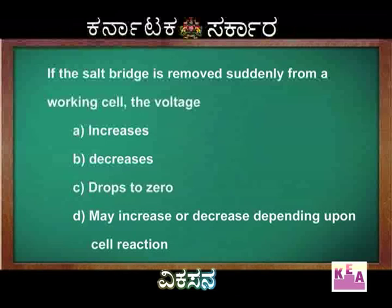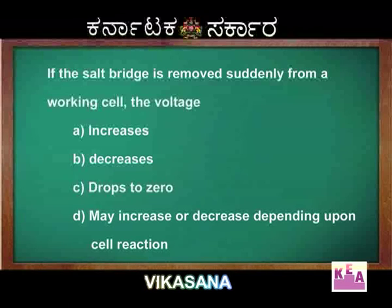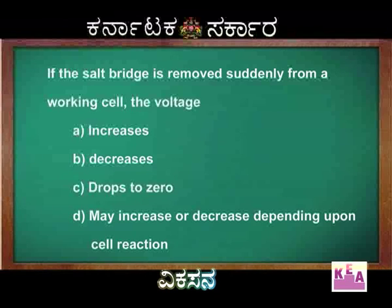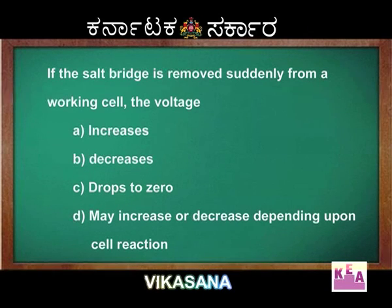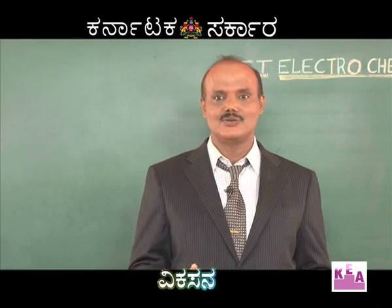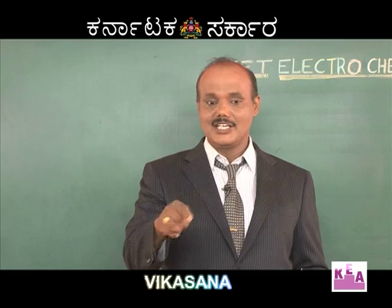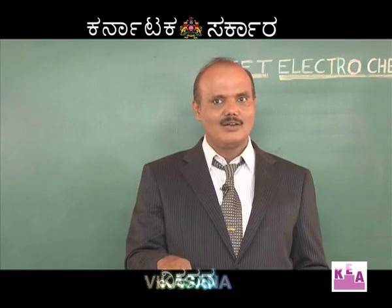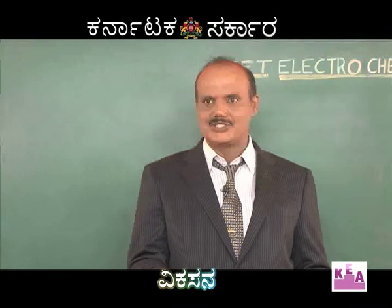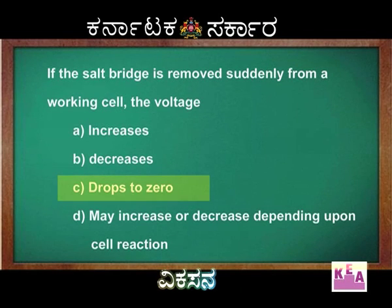Next question: If the salt bridge is removed suddenly from a working cell, the voltage — (a) increases, (b) decreases, (c) drops to zero, (d) may increase or decrease depending on the cell reaction. The answer is (c): voltage drops to zero, because the salt bridge provides the connection between the two electrodes, and without it no EMF is produced.